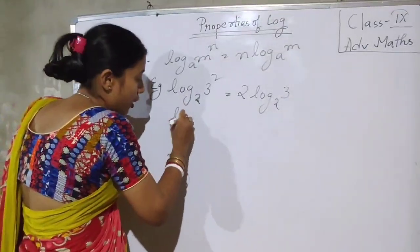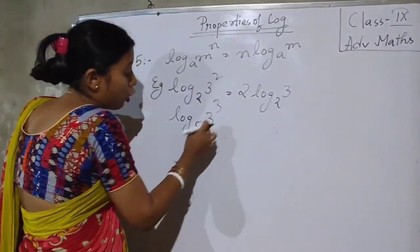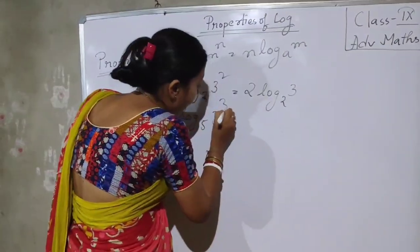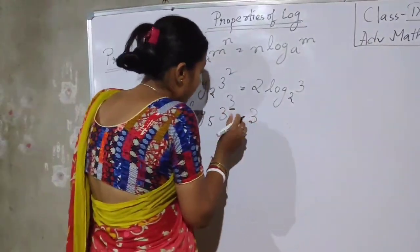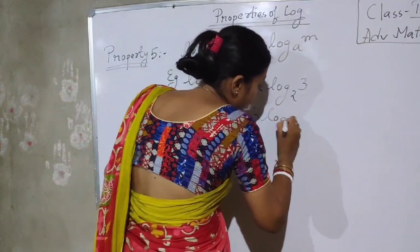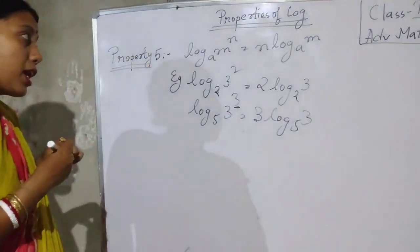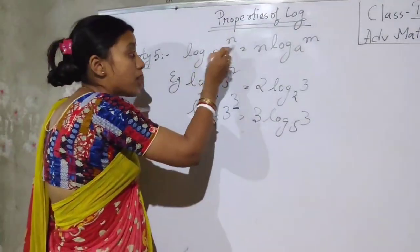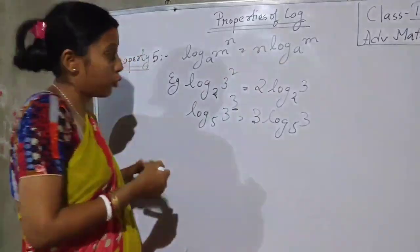Now property 5: log of M to the power N base A is equal to N times log M base A. The power will come outside as multiplication. For example, log of 3 squared base 2 equals 2 log of 3 base 2. Another example: log of 3 cubed base 5 equals 3 log of 3 base 5. Only the power here will go outside as multiplication.